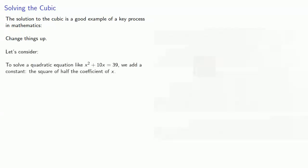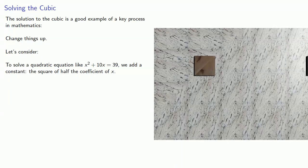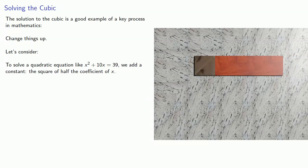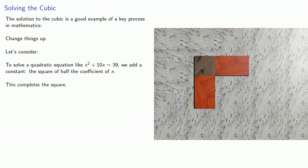Let's consider. To solve a quadratic equation like x² + 10x = 39, we add a constant, the square of half the coefficient of x. And this completes the square.